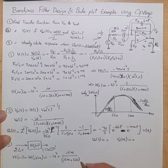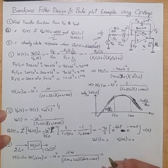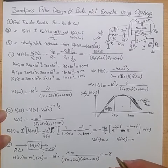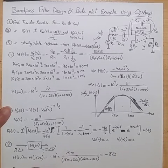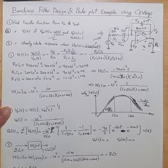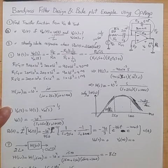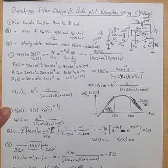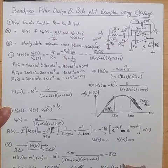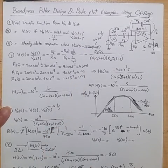Multiplying out and simplifying the complex expressions gives |H(j500)| = 8 with a phase of 0°, so H(j500) = −8 (including the negative sign gives a phase of 180°). The output amplitude is 2 × 8 = 16, with total phase 180°. Therefore the steady-state output is v_out(t) = −16cos(500t).